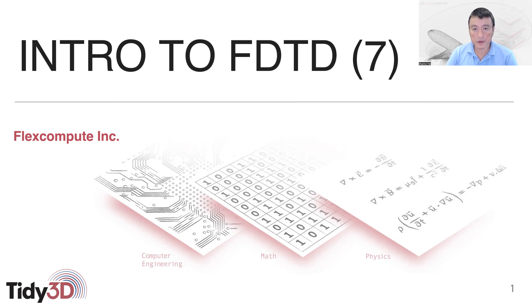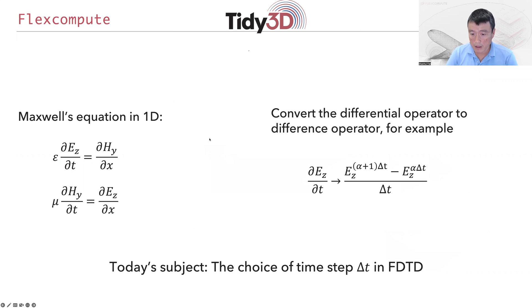Today we'll continue discussion on algorithms in the finite difference time domain code, or the FDTD method. I'm Shanhui Fan from FlexCompute. Today's subject is about the choice of time step Δt in FDTD.